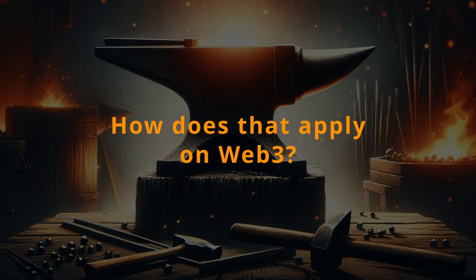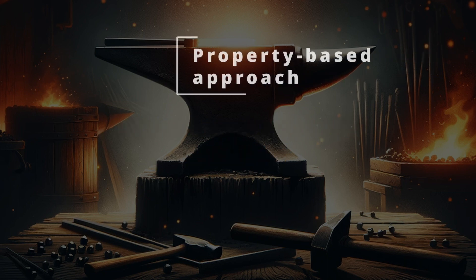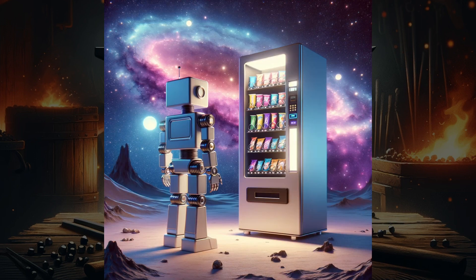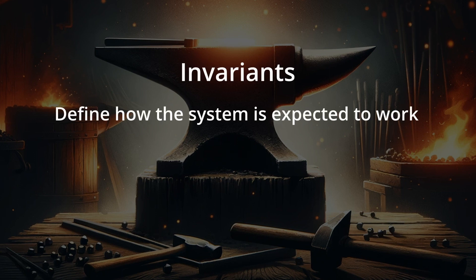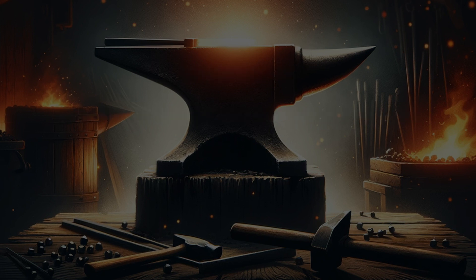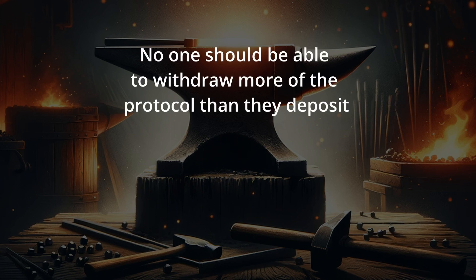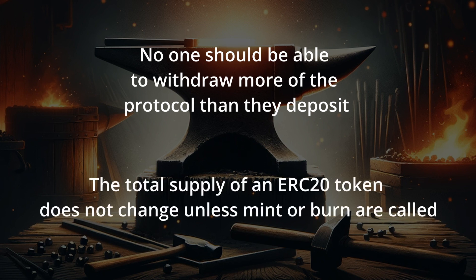How do we bring that idea to Web3? In the context of Web3 and smart contracts, fuzzing often takes a property-based approach — like a robot testing a digital vending machine, in this case a smart contract that's supposed to only dispense a digital soda (a cryptocurrency transaction) when it receives a digital coin. This approach rigorously tests the contract's logic and rules against a wide range of inputs. These properties are also known as invariants, and their main purpose is to define how the system is expected to work. Examples include: no one should be able to withdraw more than they deposit, and the total supply of an ERC20 token does not change unless mint or burn are called.